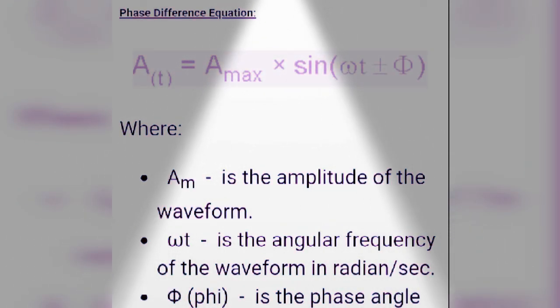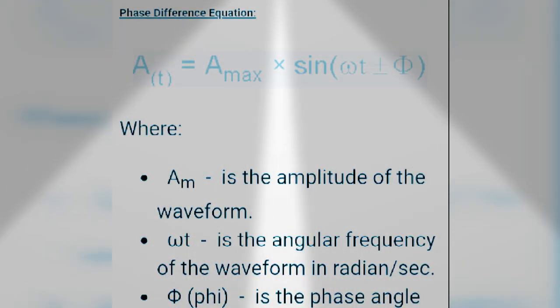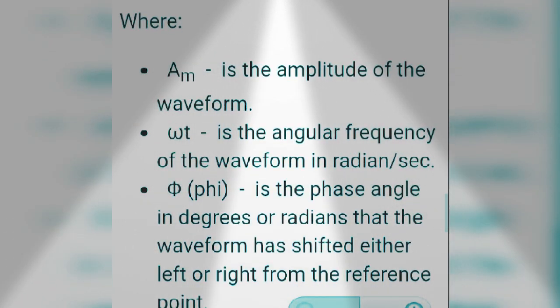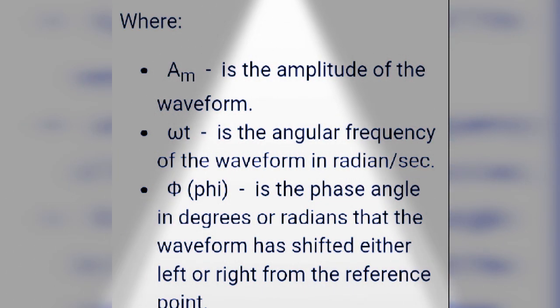A(t) = A_m sin(ωt ± φ), where A_m is the amplitude of the waveform, ωt is the angular frequency of the waveform in radians per second, and φ (or θ) is the phase angle in degrees or radians that the waveform has shifted either left or right from the reference point.